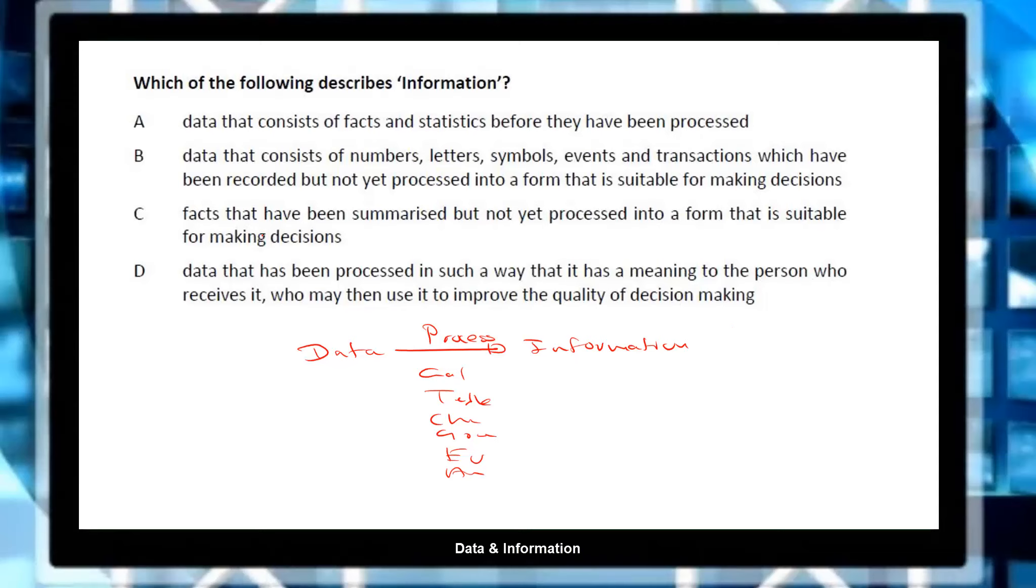Option C: facts that have been summarized but not yet processed into a form that is suitable for decision making. So once you are summarizing the data, means like you are doing some kind of process, right? So eventually it will become some kind of information. So that is also a wrong statement.